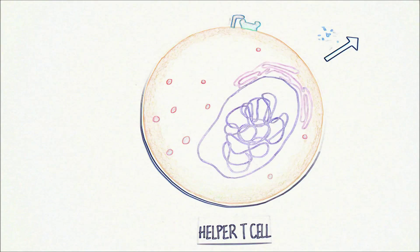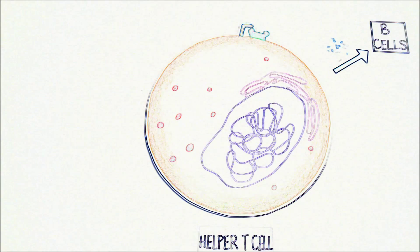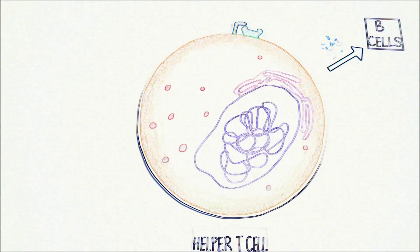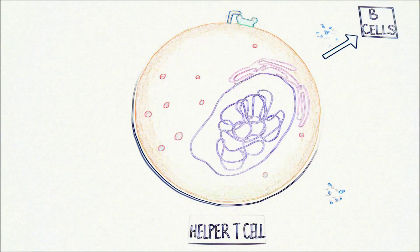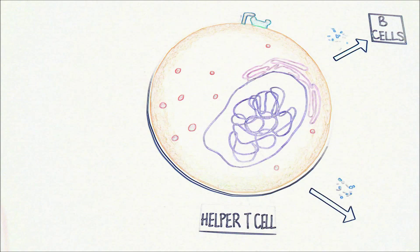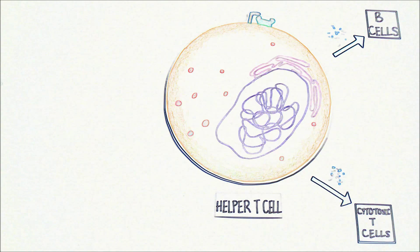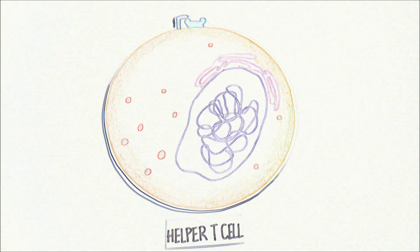Helper T-cells help activate B-cells, which secrete antibodies that mark pathogens, and cytotoxic T-cells, which destroy labeled infected cells.